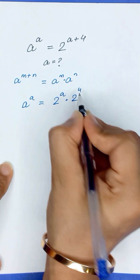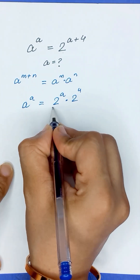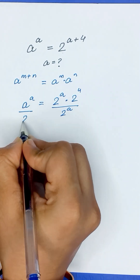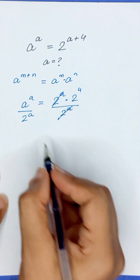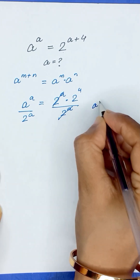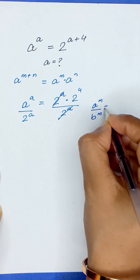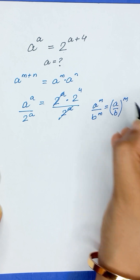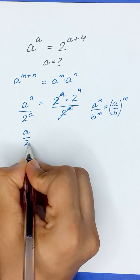Now we will divide 2 to the power a on both sides, so it will be cancelled out. We also know that a to the power m over b to the power m is equal to a divided by b, whole to the power m. So it can be written as a divided by 2, whole to the power a.